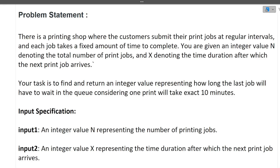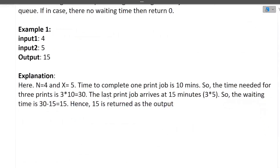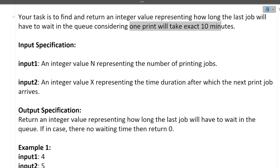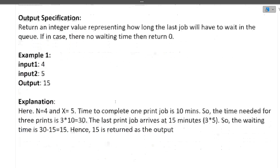The third and final question: there is a printing shop where customers submit print jobs at regular intervals and each job takes a fixed time to complete. You are given integer N — the total number of print jobs — and X — the time duration after which the next print job arrives. Your task is to find how long the last job will have to wait in the queue, given that one print takes exactly 10 minutes.